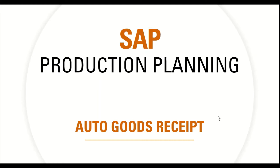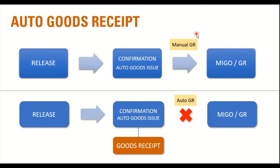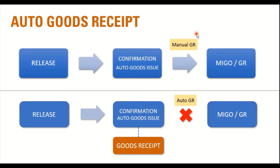Here we can see two scenarios: one with the manual goods receipt process and the other with an automatic goods receipt process. In case of a manual GR process, the execution steps start with the release of the production order or process order, then the confirmation process. If the business is using the backflush scenario, the components get consumed automatically upon confirming the first operation. The user then has to perform an additional transaction in MIGO to perform the goods receipt of the finished product.